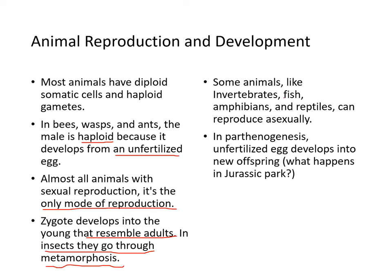In some animals like invertebrates, fish, amphibians, and reptiles, they can reproduce asexually. In parthenogenesis, an unfertilized egg develops into a new offspring. This is what happens in Jurassic Park — DNA from a frog was joined with that of the dinosaur, and that led to unfertilized eggs developing into dinosaurs. That's where they get the idea.